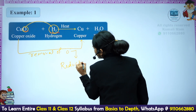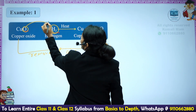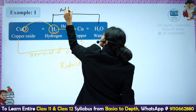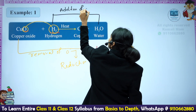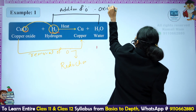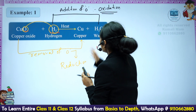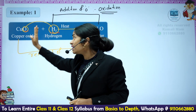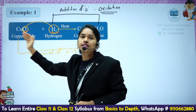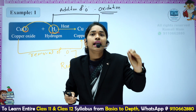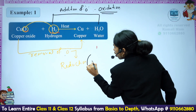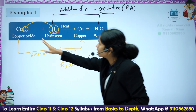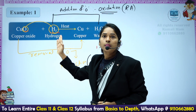What is it, students? Reduction — we are removing oxygen. Now, hydrogen is converting into H2O; hydrogen is taking this oxygen, so addition of oxygen is taking place. Addition of oxygen is oxidation. H2 is undergoing oxidation — H2 is getting oxygen, and CuO is giving that oxygen. So CuO is making hydrogen undergo oxidation, therefore CuO is an oxidizing agent. Simply: the element which is undergoing reduction is an oxidizing agent; the element which is undergoing oxidation is a reducing agent.